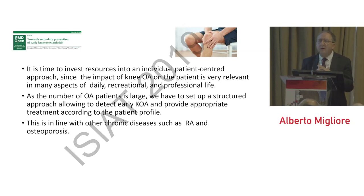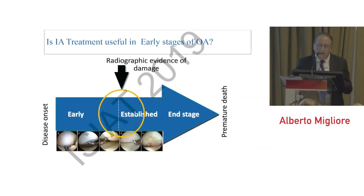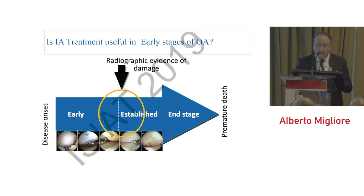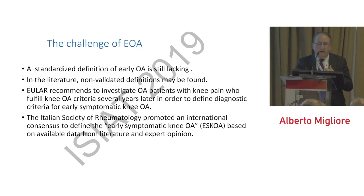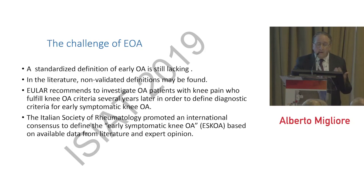We learn a lot from what was done in other diseases. Intra-articular treatment is useful in the early stage of osteoarthritis, and perhaps at the beginning of established OA we have the best opportunity for treatment. However, a key challenge is the definition of early osteoarthritis, which is still lacking, and there are no validated definitions in the literature.